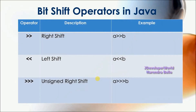We have 3 bitwise shift operators in Java: right shift, left shift, and unsigned right shift. Here is an example where we can see how we are using these shift operators on two variables.